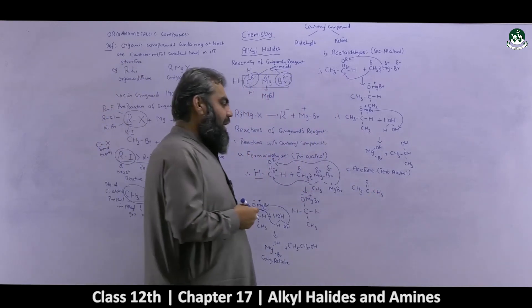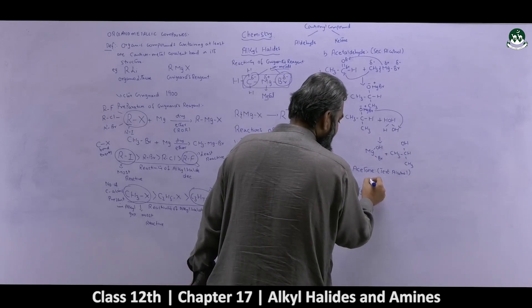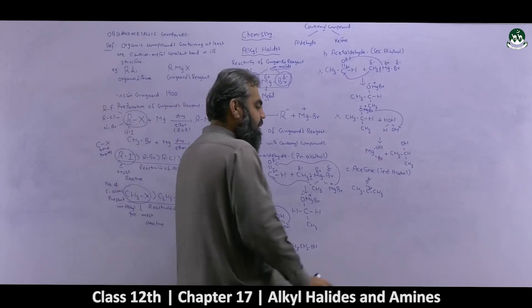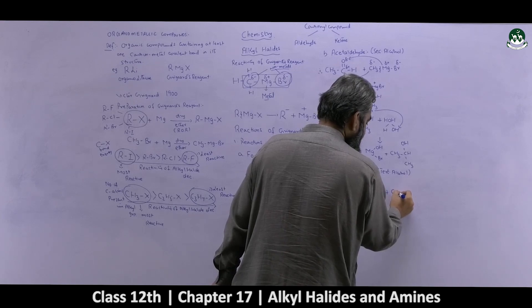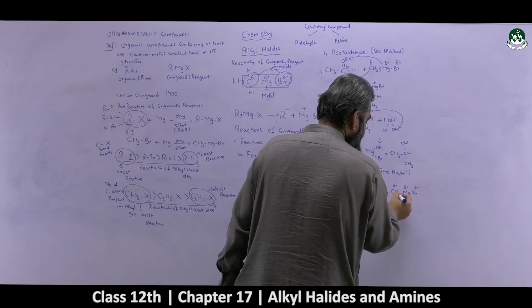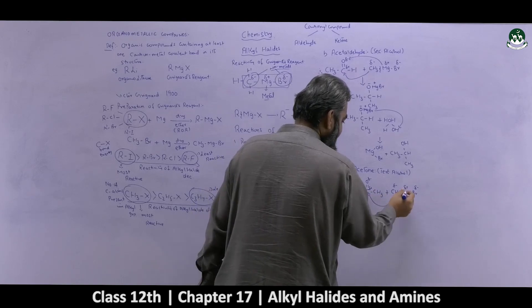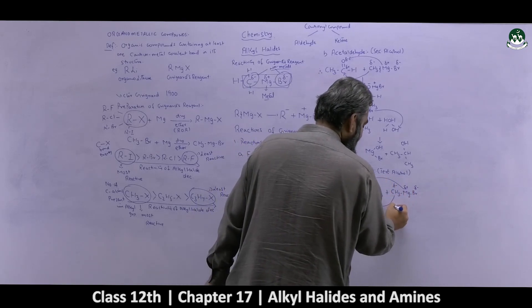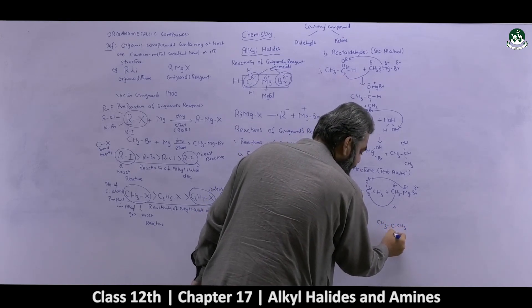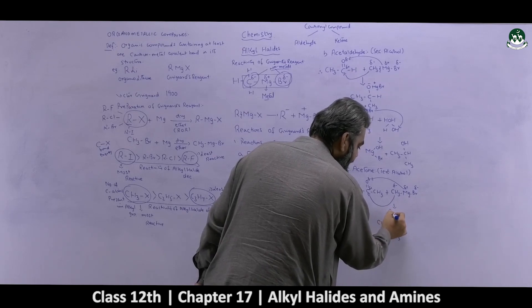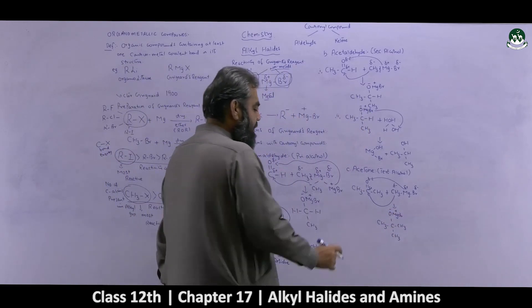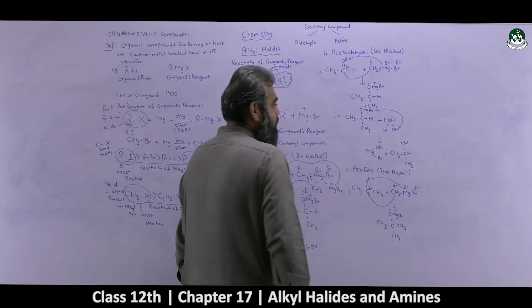Combining acetone with CH₃-Mg-Br: CH₃ is attached to the carbonyl carbon and MgBr to the oxygen, giving the intermediate (CH₃)₂C(-CH₃)-O⁻-MgBr. This is step number one, producing the unstable intermediate. In step number two, as we have been doing, you carry out the process of hydrolysis of this intermediate.